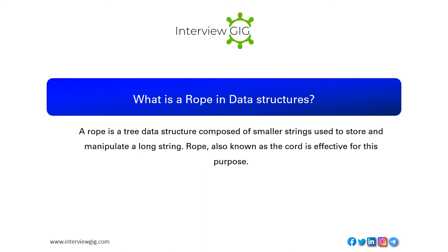What is a rope in data structures? A rope is a tree data structure composed of smaller strings, used to store and manipulate a long string. Rope, also known as the cord, is effective for this purpose.